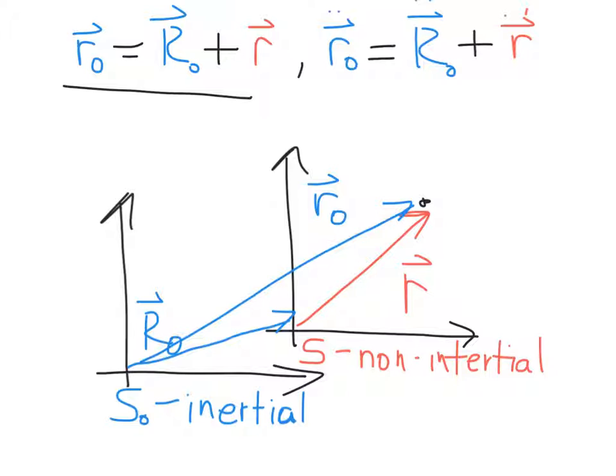What's happening here is that this is the acceleration as seen in the inertial frame. And it's related to the acceleration of the non-inertial frame. That's the acceleration of the frame S as measured with respect to S0, plus the acceleration as seen in the non-inertial frame. So let's rewrite these equations and try to seek a little more clarity.